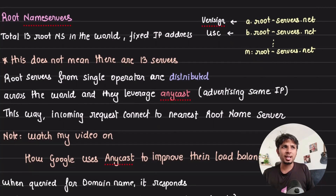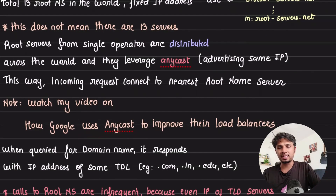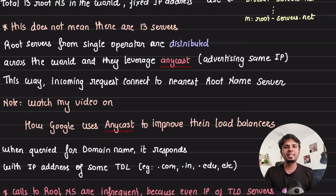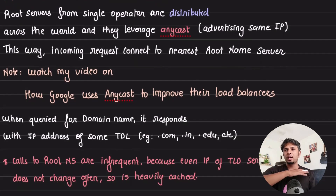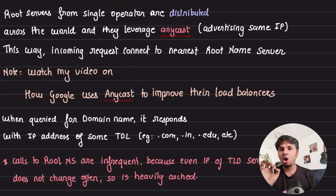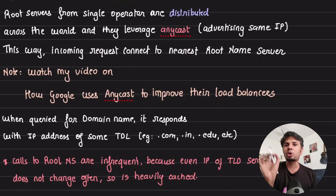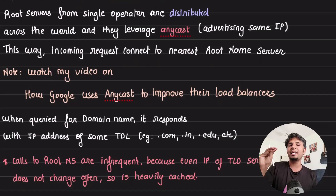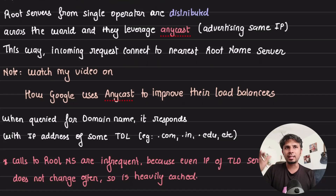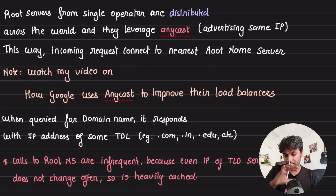I've already explained anycast in another video — how Google uses anycast to make their load balancers highly available — highly recommended. Now, when your request reaches the closest root name server, that server responds with the IP address of the server handling the top-level domain .com, since we're looking for google.com. For every TLD, there are dedicated servers — a set for .com, a set for .in, a set for .edu, and so on.